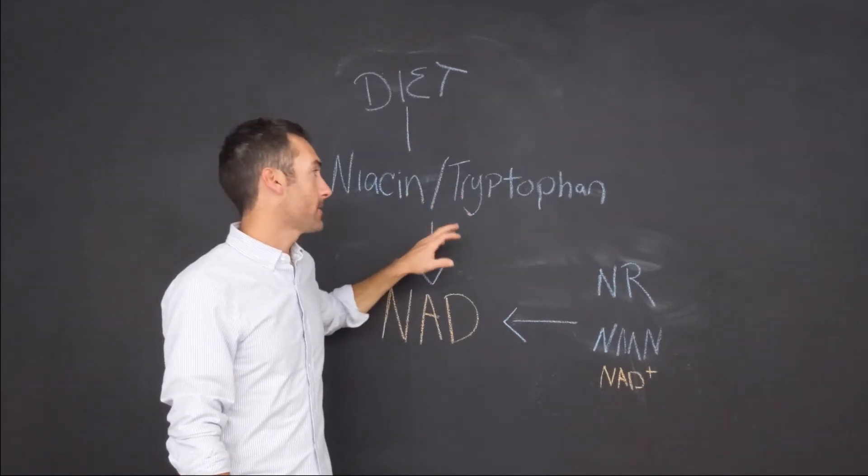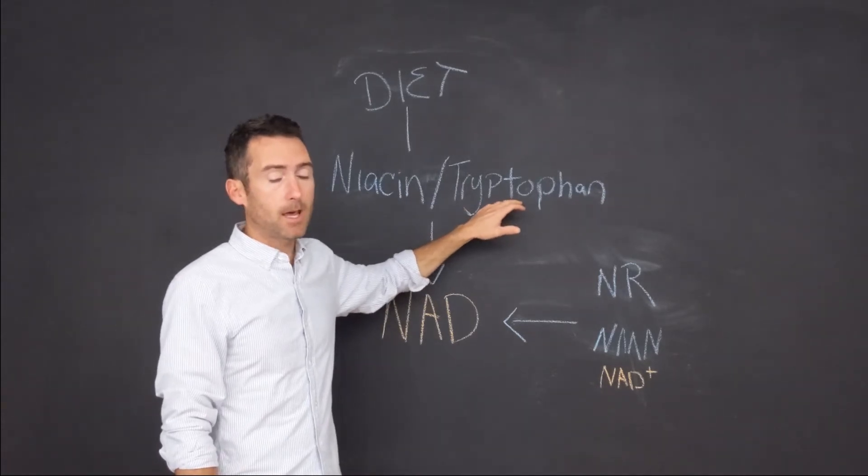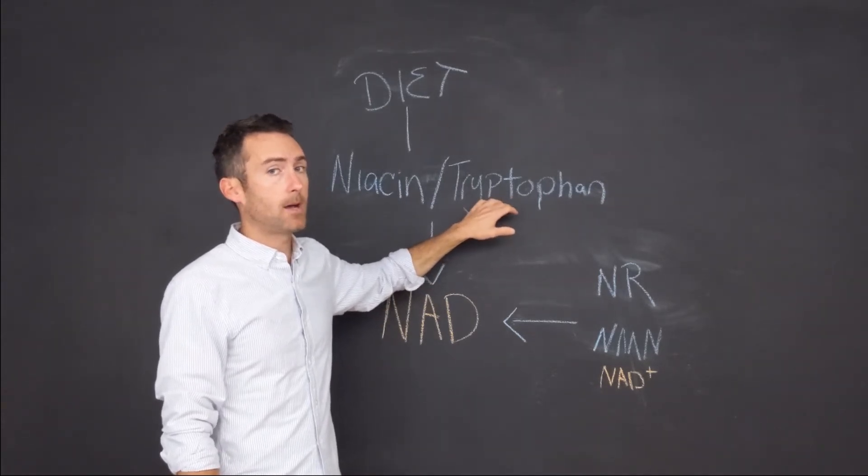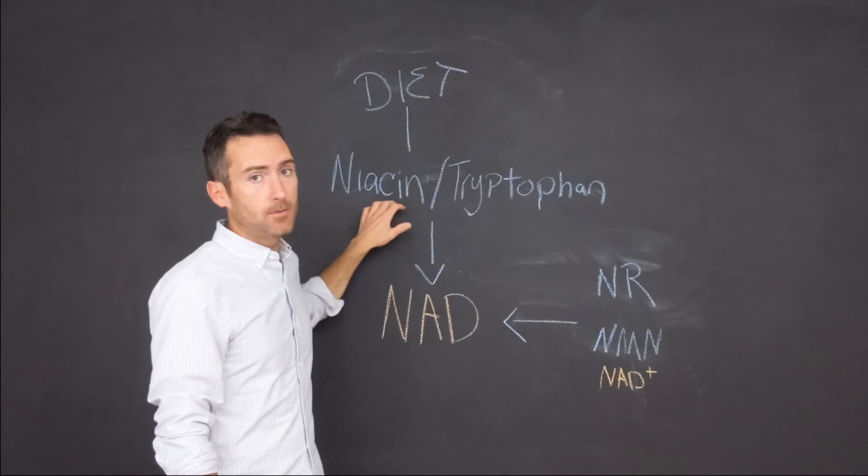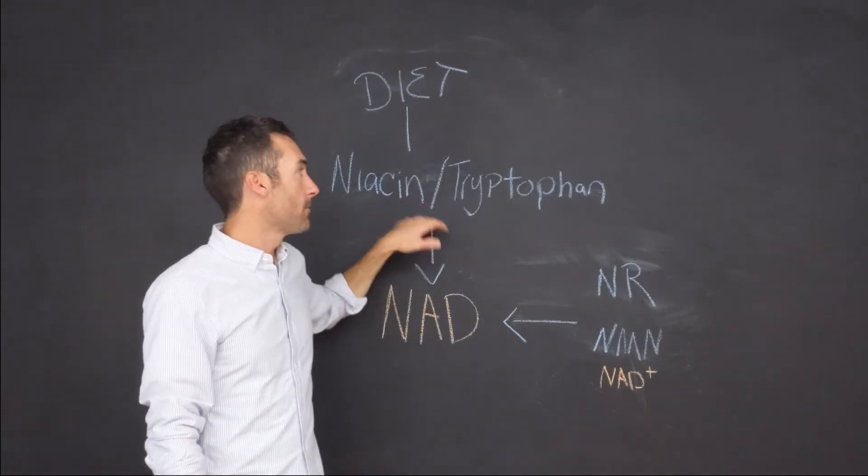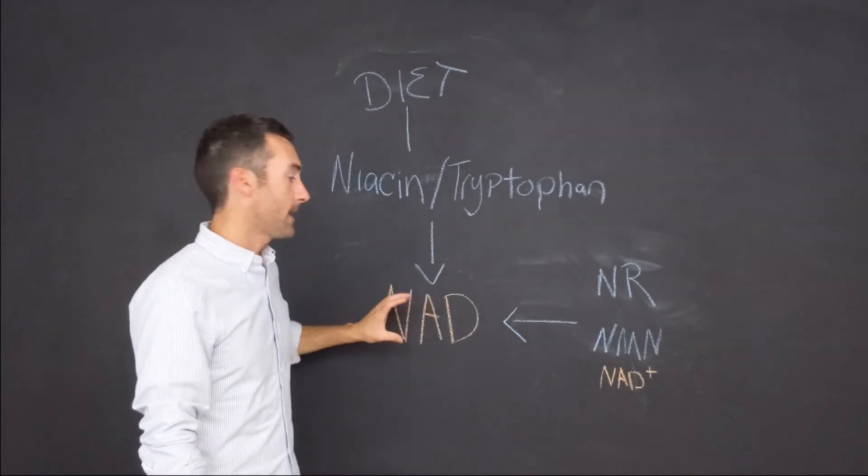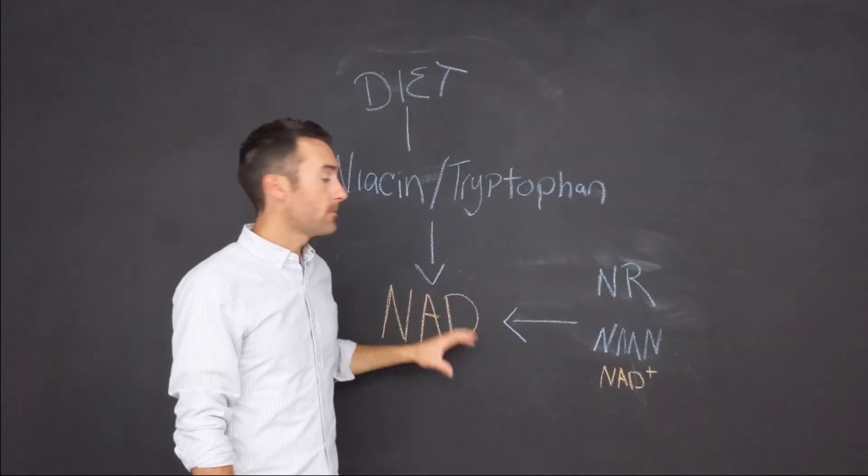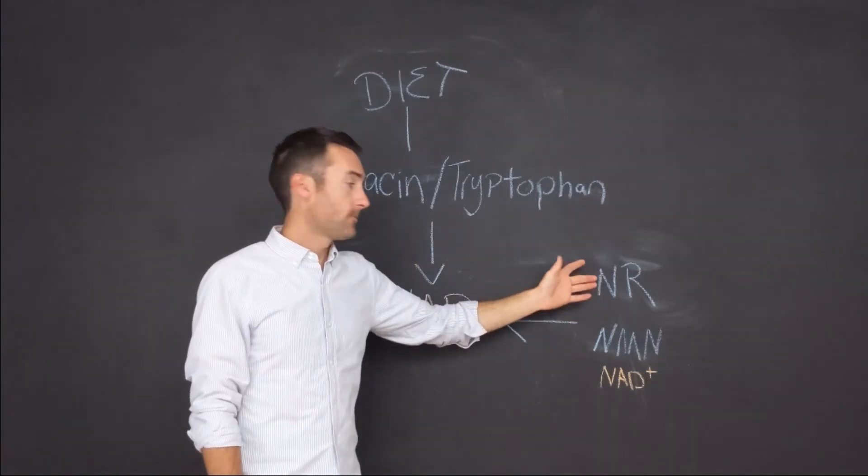sources. But if you're vegan, you want to make sure that you're getting tryptophan because plants don't have a lot of this amino acid. And also vitamin B3, niacin, is something you may also want to supplement with if you're vegan. Both of those in your diet will make NAD. You can also make NAD from three sources of